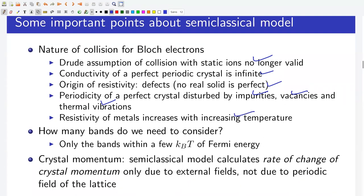The next question is how many bands do we need to consider in the semi-classical model. At T equals 0 K, all states above the Fermi energy are vacant. Even at finite temperature, states with energy many k_B T above the Fermi energy remain unoccupied. Thus we need to consider only those bands having energies within a few k_B T of the Fermi energy. Note that the semi-classical model calculates the rate of change of crystal momentum only due to external fields, not due to the periodic field of the lattice — the effect of the periodic field is embedded in the energy dispersion relation.